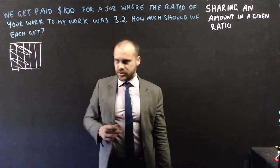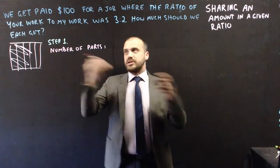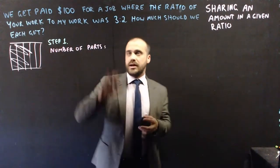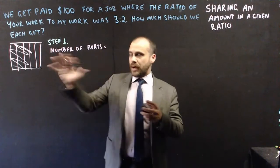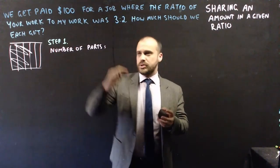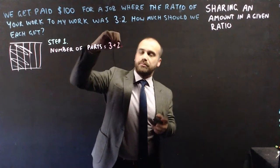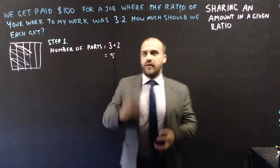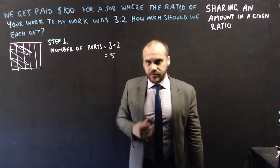Here's one way to solve it. Step 1 is to find the number of parts we want to split this money into. You did 3 parts of the work and I did 2 parts of the work, which means the total number of parts of work that got done is 5.